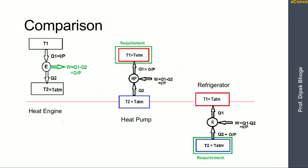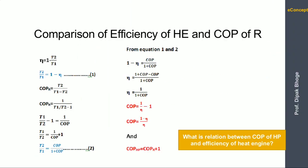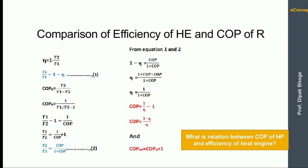In the case of the refrigerator, the temperature obtained is below that of the atmospheric temperature. The green colored output of each system: for the heat engine the output is W (work), for the heat pump the output is T1 temperature, and for the refrigerator T2 is the output.